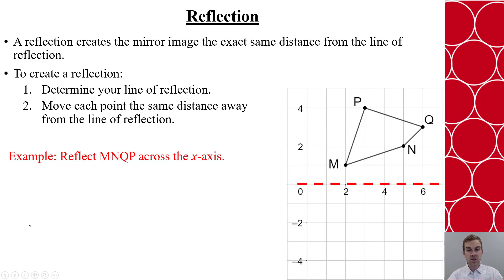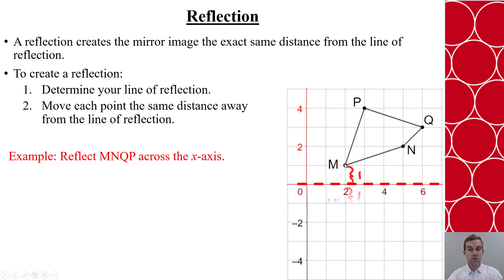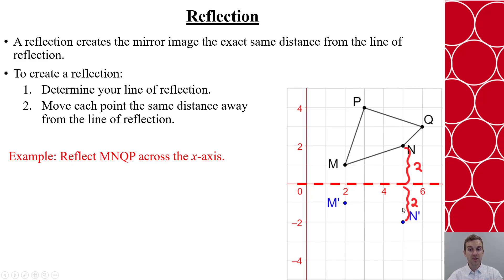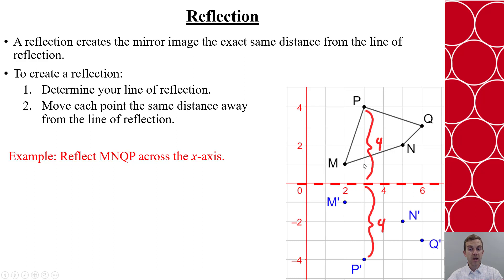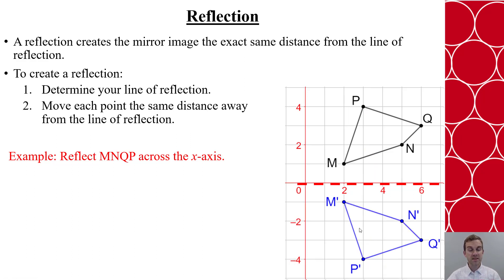Here is my line of reflection at the x-axis. So if I want to create M prime, I'm going to make it one unit below the x-axis. When I go to N prime, I'm going to be two units below the x-axis. Q prime will be three units below the x-axis. And P prime will be four units below the x-axis. You can see I'm in the same line, just I'm moving it directly below. Now I connect my four points, and I have my reflected quadrilateral.